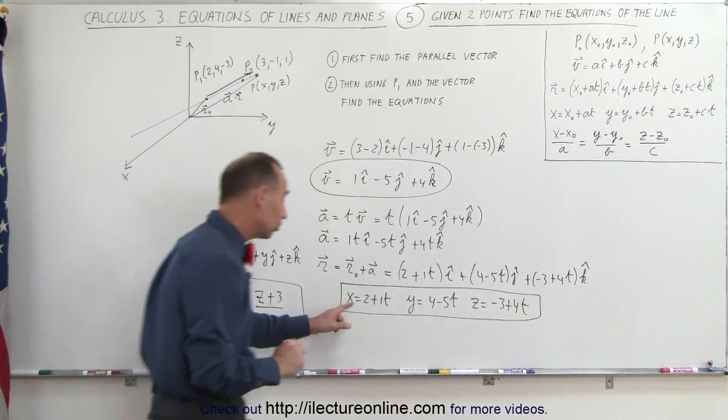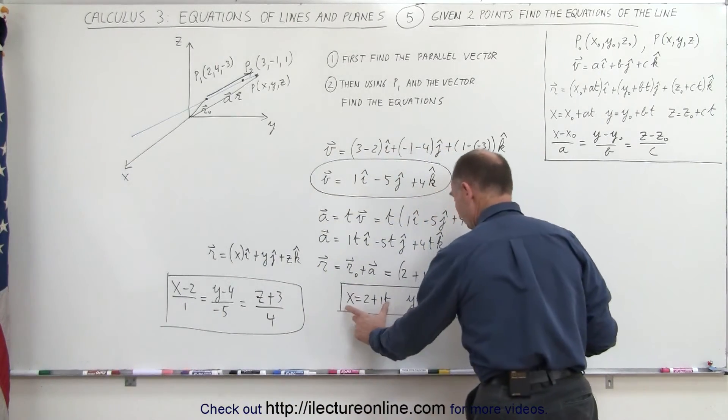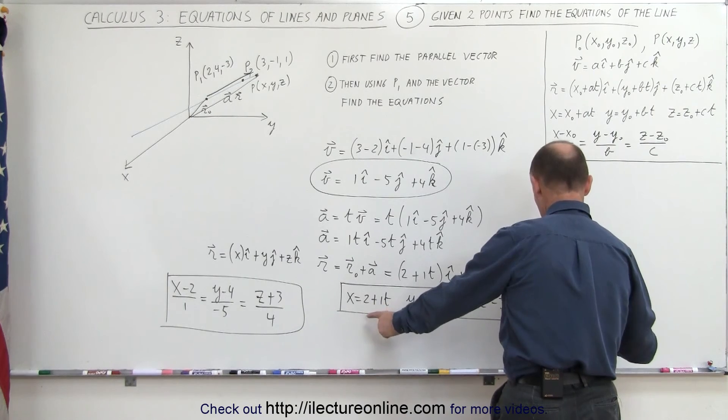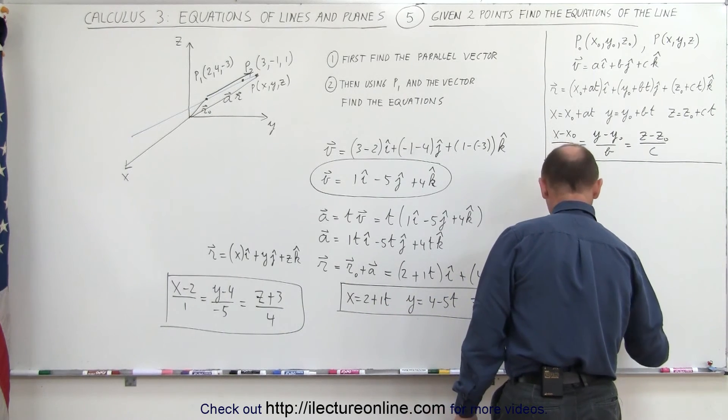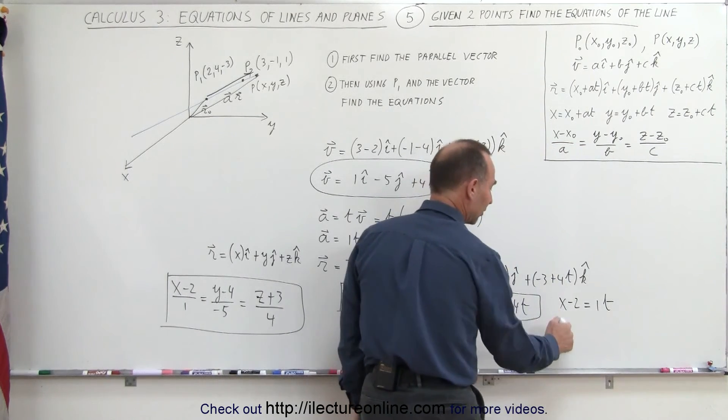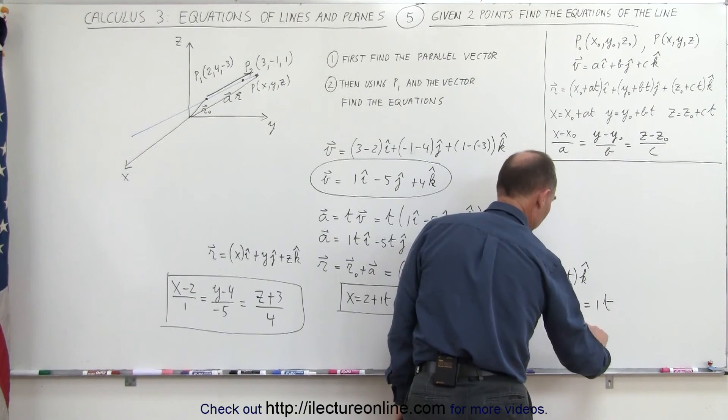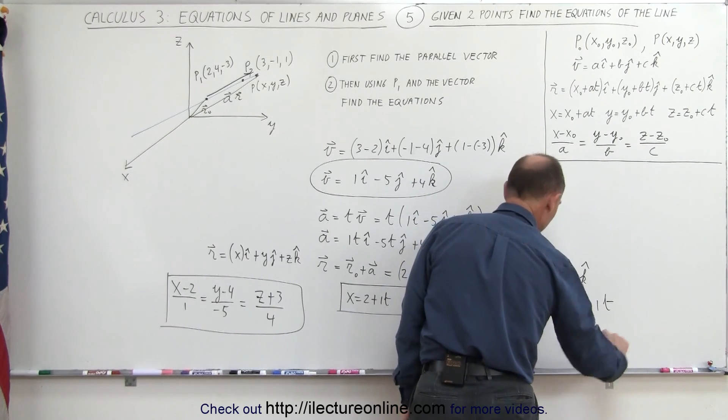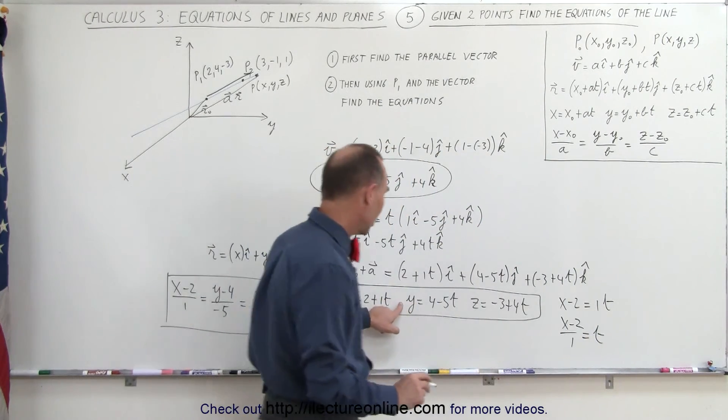If you didn't quite follow what I just did, let me show you what I did again. I'll take the first equation here, I can write this as x minus 2 equals 1t, and if I divide both sides by 1, I get x minus 2 over 1 is equal to t.